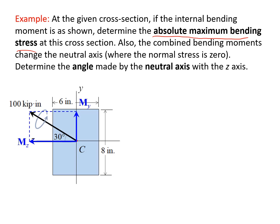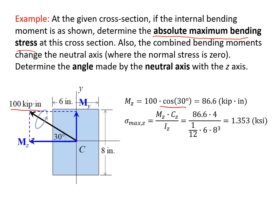According to trigonometry, Mz equals 100 kip·inch times cosine 30°, which is 86.6 kip·inch. The maximum bending stress caused by Mz can be determined by the flexure formula: Mz times cz divided by Iz. Here cz is the maximum distance, which is half of 8 inches — so 4 inches. Iz is the area moment of inertia about the z-axis. The formula for a rectangle is (1/12)bh³: (1/12) times width 6 inches times height 8³. The result is 1.353 ksi.